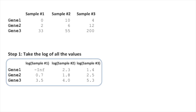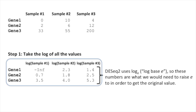So the first thing that DESeq2 does is it takes the log of all the values. DESeq2 uses the log base E. So these numbers are what we would need to raise E to in order to get the original value. So if the original read count was 10, we'd have to raise E to 2.3 to get that value. DESeq2 could have used log base 2 or log base 10, but log base E is the default in R, which is the programming language that was used to create DESeq2.